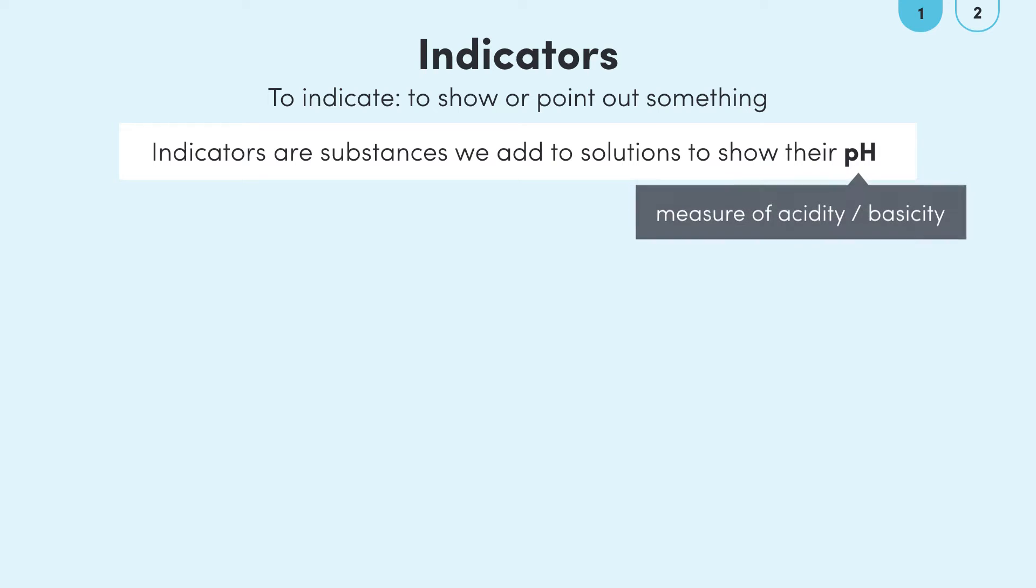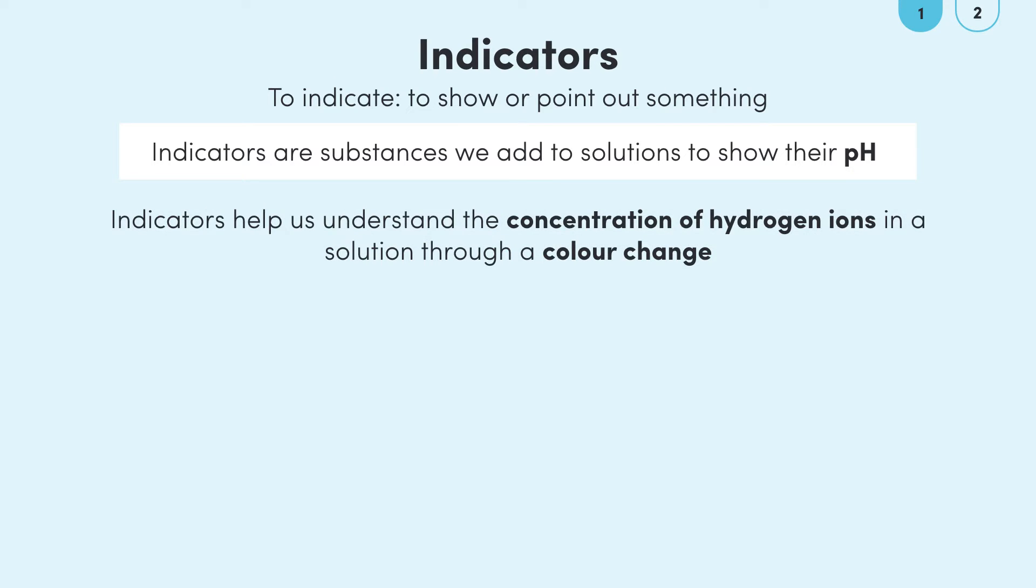Remember the pH of a solution is a measure of how acidic or basic it is depending on the concentration of hydrogen ions. Indicators can actually help us to understand the concentration of hydrogen ions within a solution through a color change. This is because almost all indicators have two main colors which they can turn.